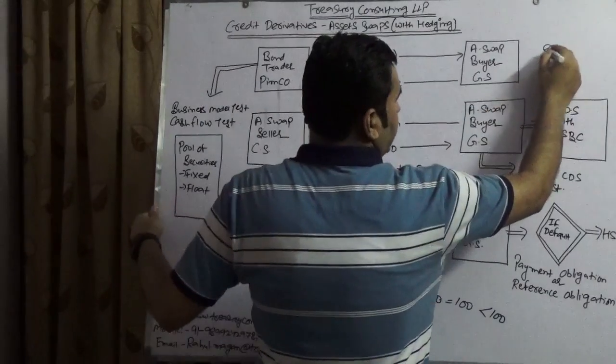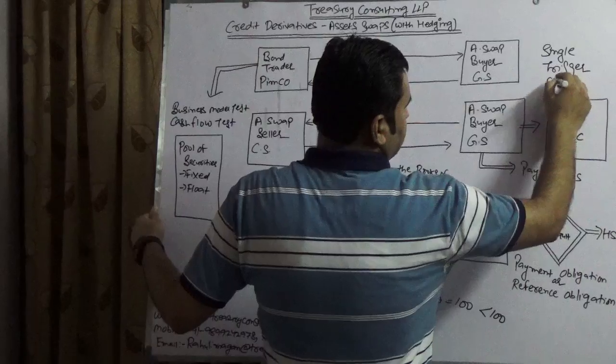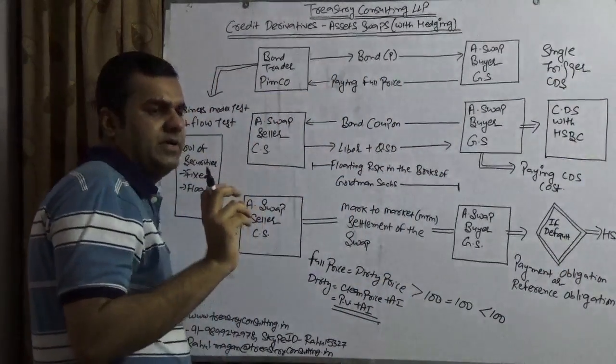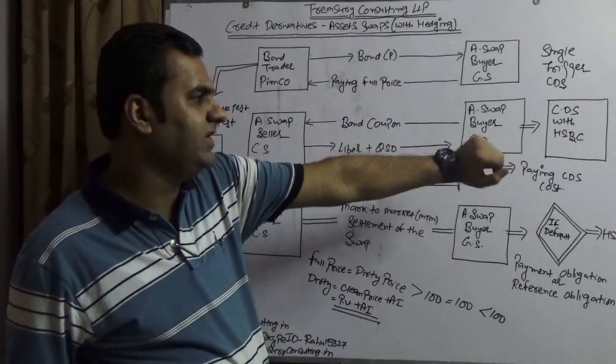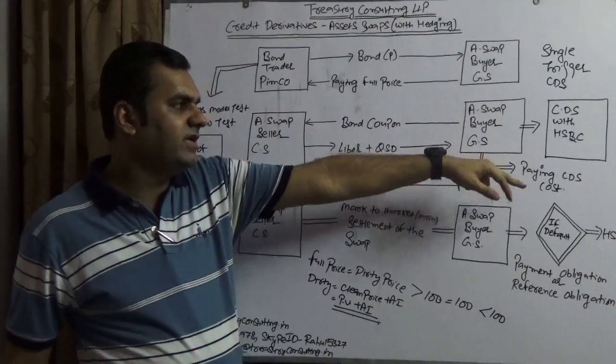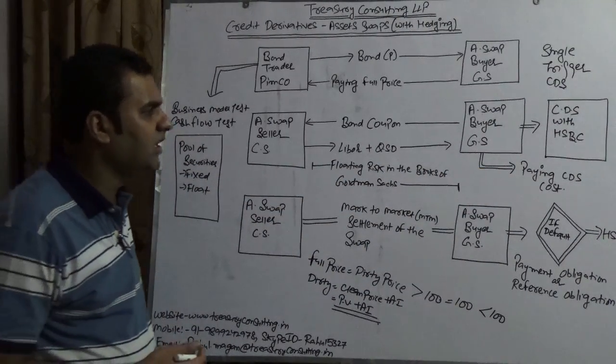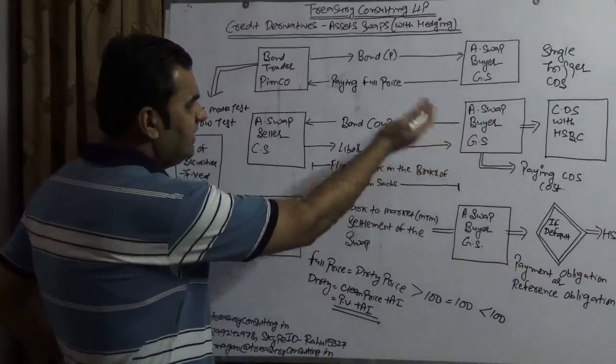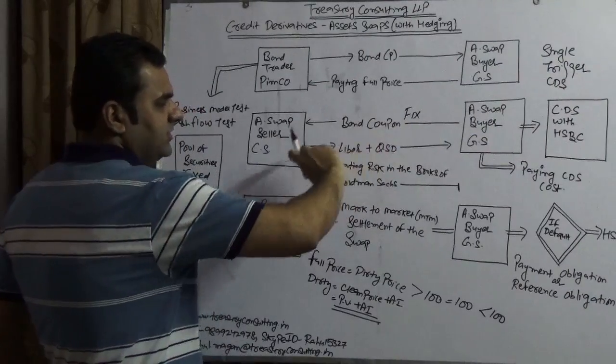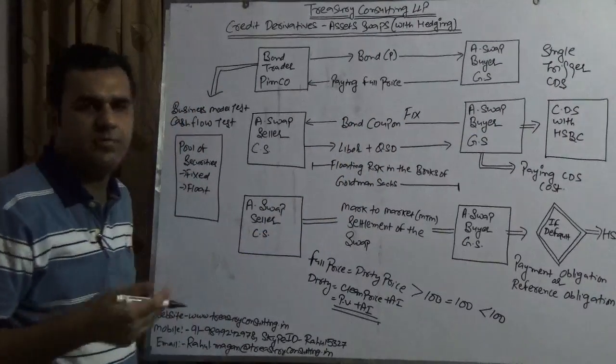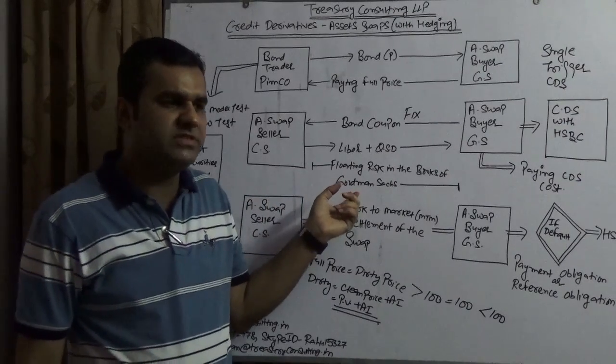Single trigger CDS means if anything would happen, it would get invoked. HSBC will get the money, and in case of any default this will invoke and HSBC will pay to GS. In the meantime, if it's not invoking, GS will continue to pay the bond coupon which is fixed and would receive the float which is LIBOR plus QSD (LIBOR plus quality spread differential). This floating risk is in the books of Goldman Sachs because they are receiving LIBOR.